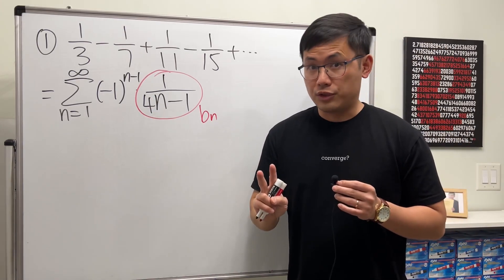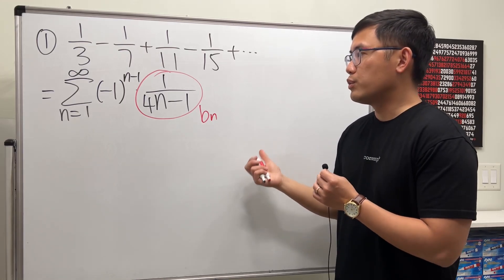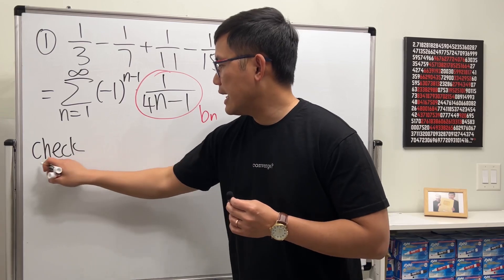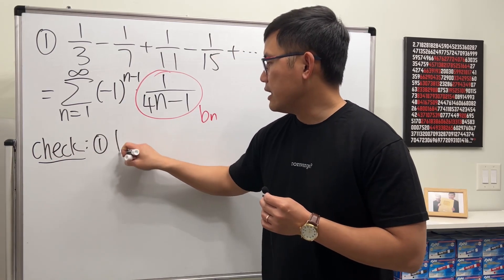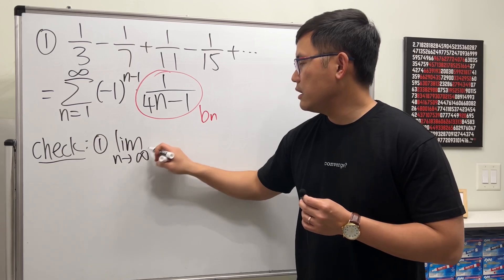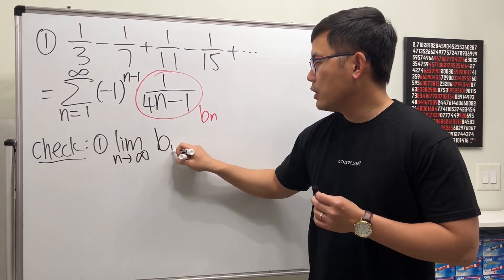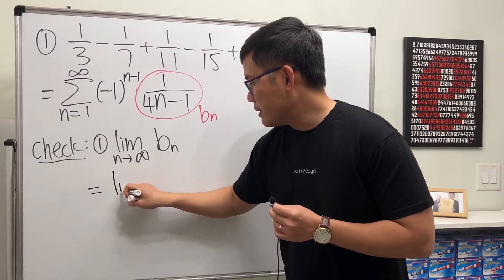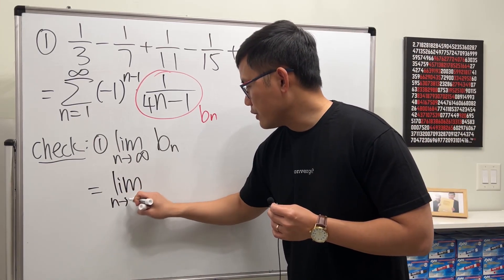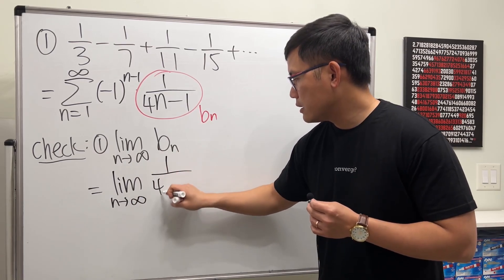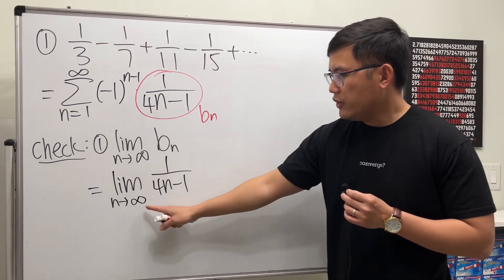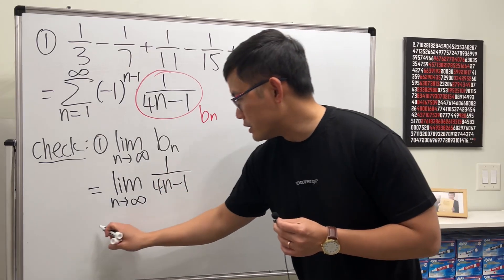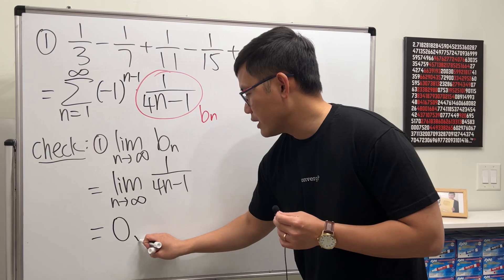There are two things we have to check in order to see if this converges or not. The first check is: if we take the limit as n goes to infinity of just bn, do we get 0? We are looking at the limit as n goes to infinity of 1 over (4n minus 1). If we put infinity in, the bottom is infinity, so 1 over infinity gives us 0. That checks.